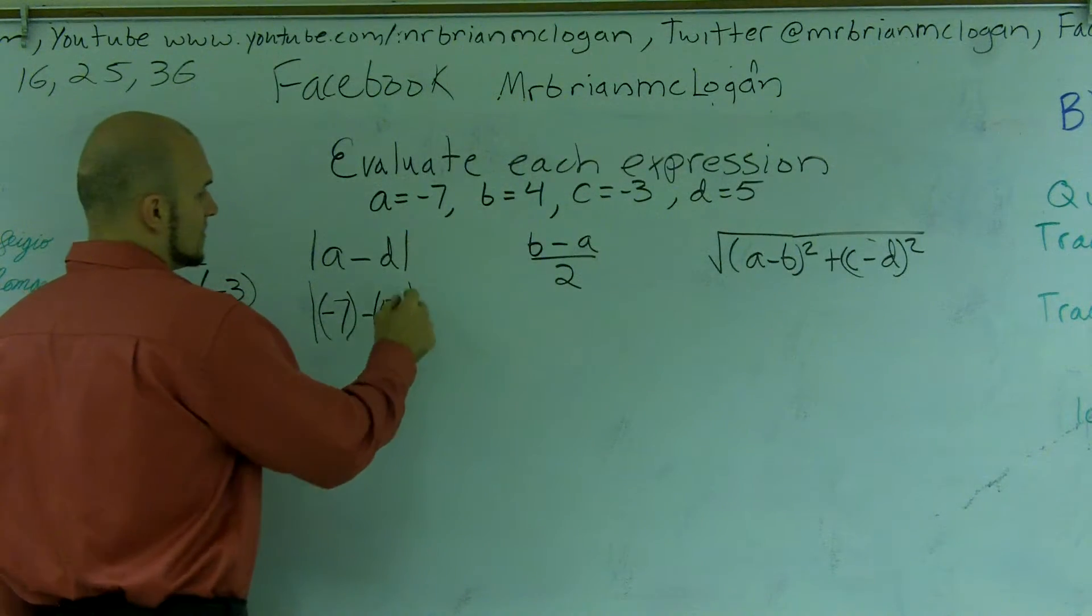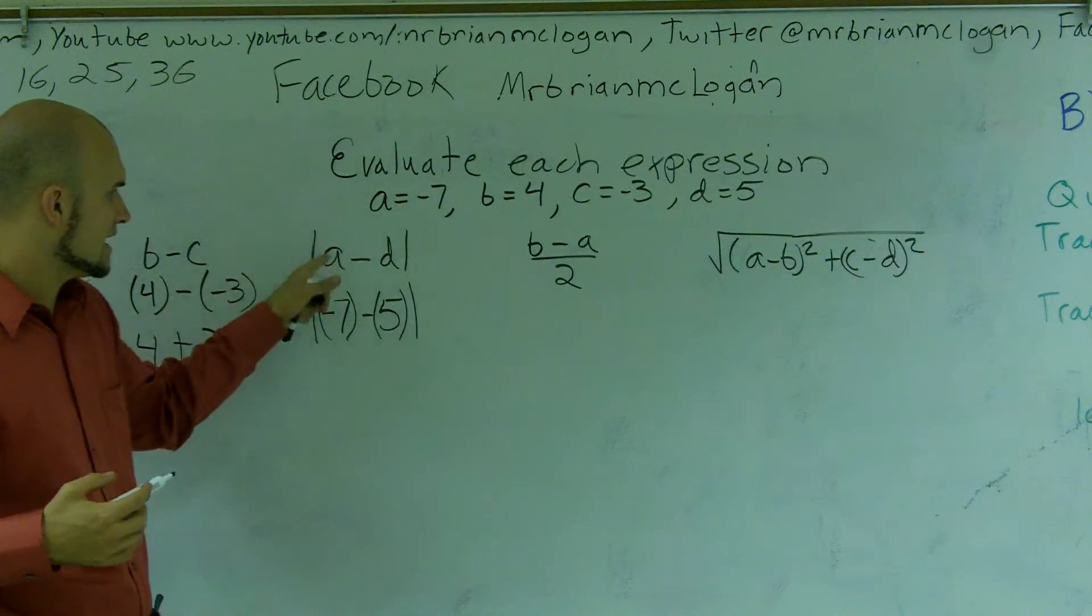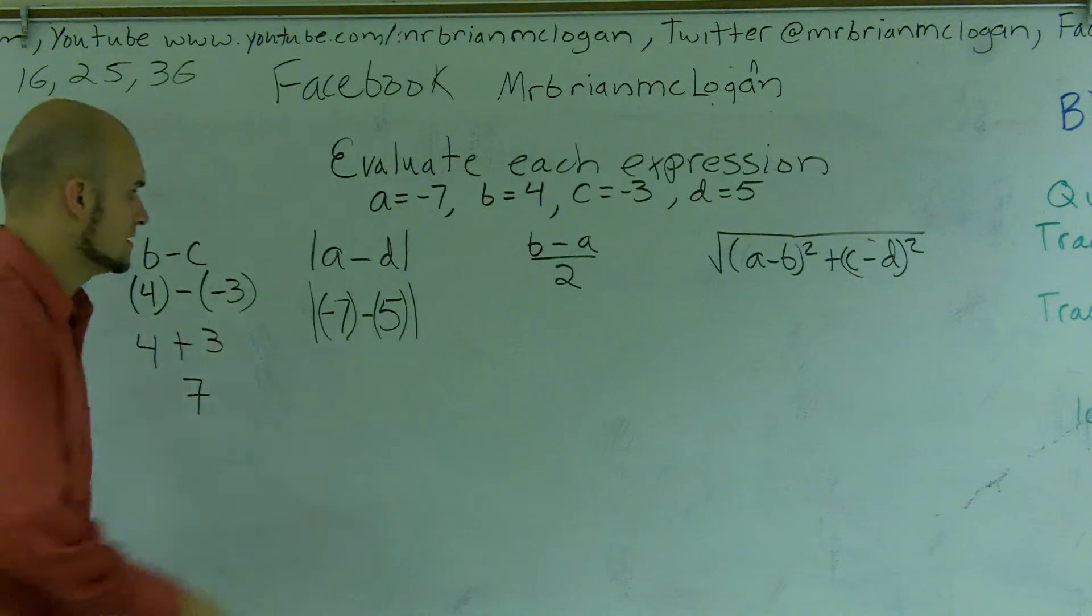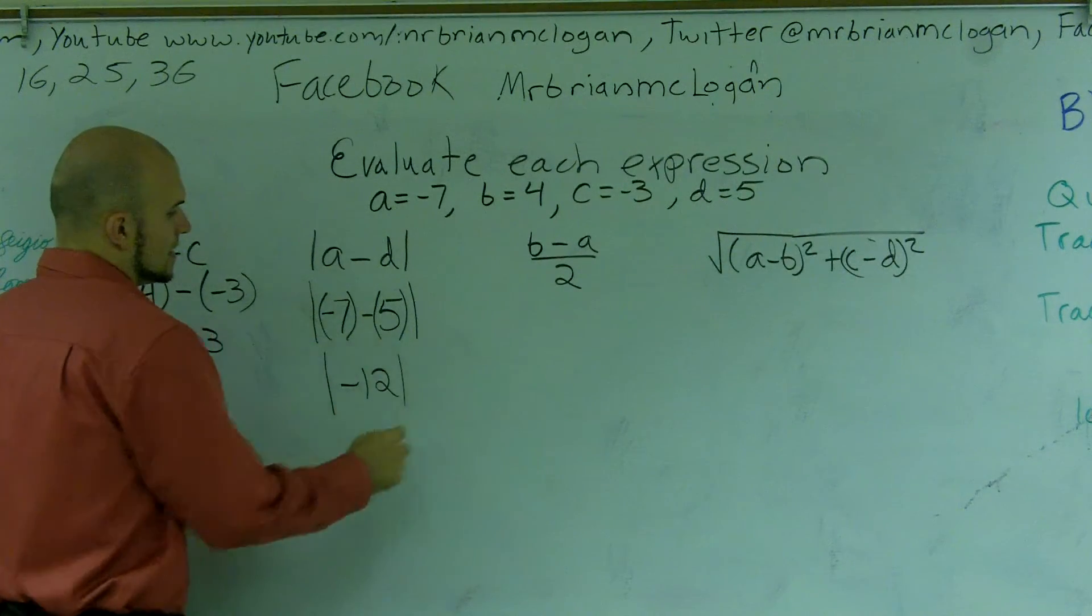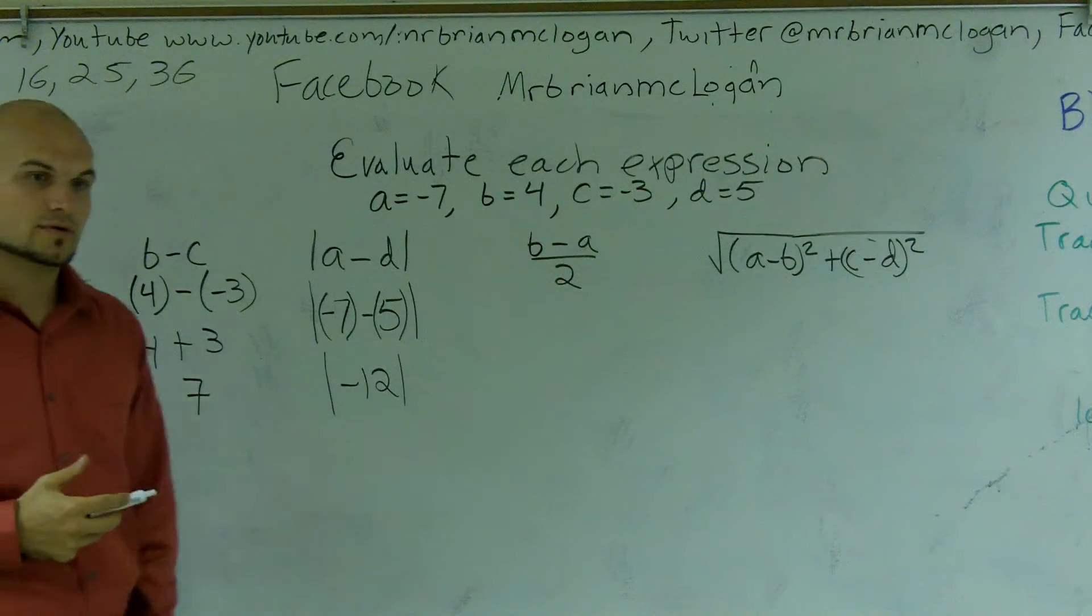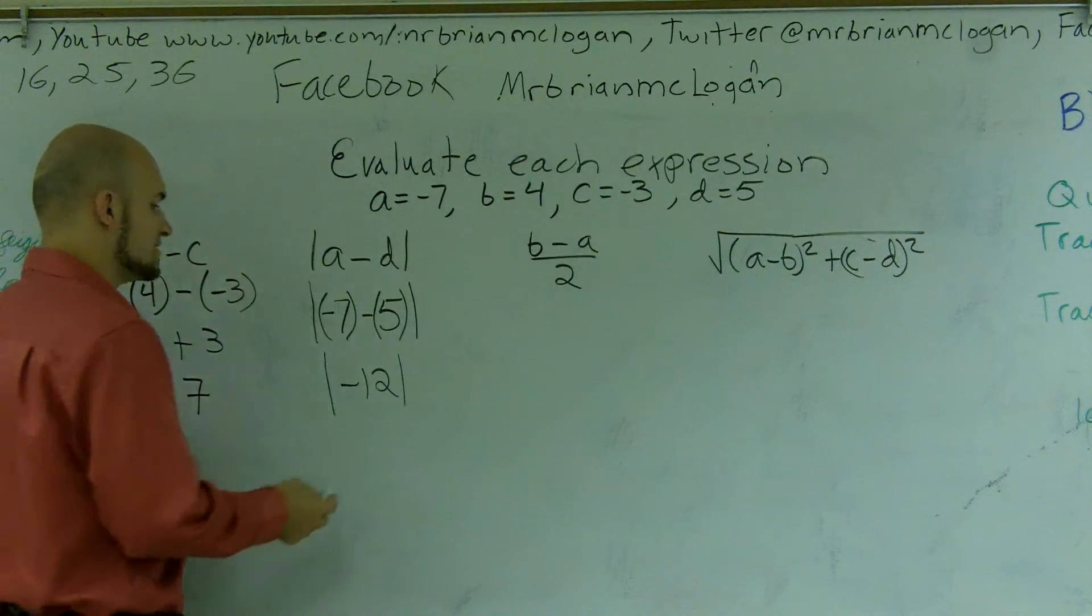And I'd just like to put them in parentheses just so we know that I plugged in negative 7 in for a and 5 in for d. So I have negative 7 minus 5 is a negative 12. And remember, the absolute value of a negative number is always going to give you a positive value.